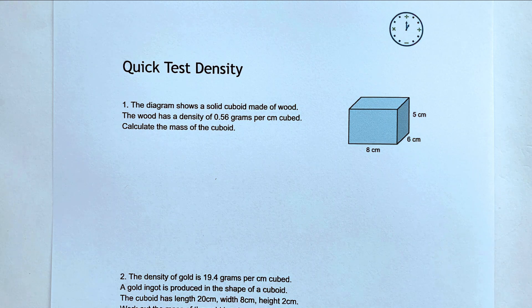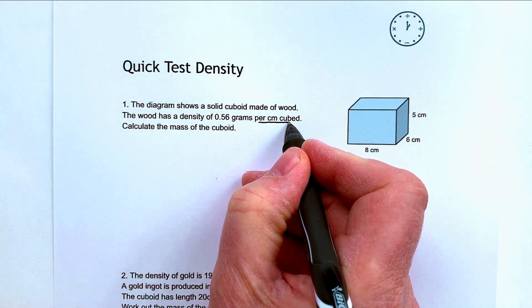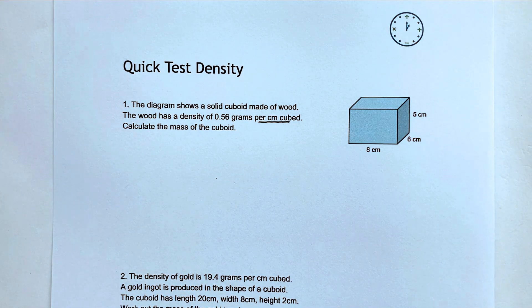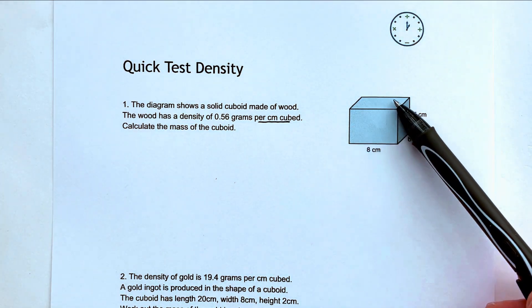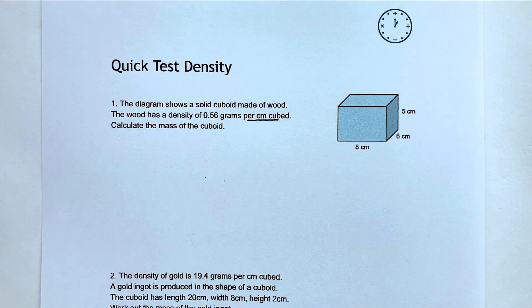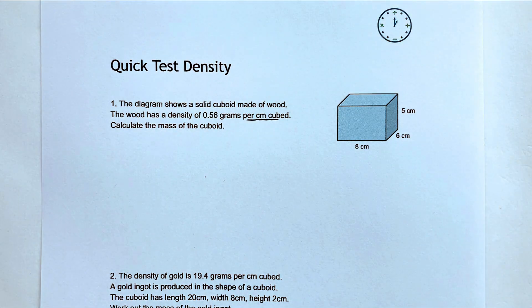So this particular one, question one, we've got wood has a density of 0.56 grams and the important thing here is that it's per centimeter cubed. So very typically with these sorts of questions you've got to make sure you get your units right. Now we're okay with this one because the volume of the cuboid we can work out by centimeters cubed because we've got centimeters, centimeters, centimeters and centimeters.